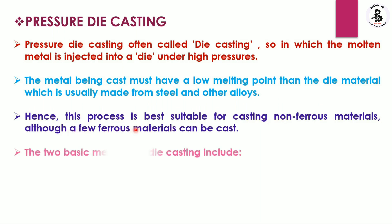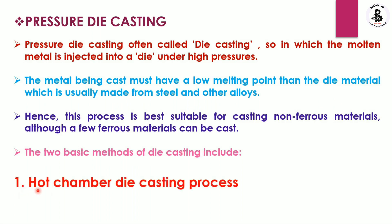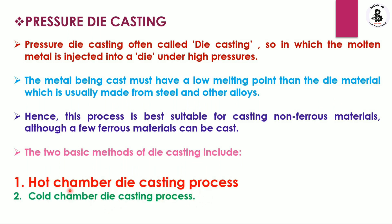There are two types of die casting methods used for making components: the first is hot chamber die casting and the second is cold chamber die casting. In this video I am only explaining about the hot chamber die casting process.